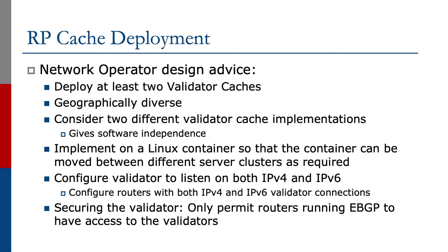Once you've built the validator cache, we need to look at how we might deploy these. With one validator cache available for the entire network, the routers end up speaking just to the one cache. If that cache goes away, the routers no longer have a means to check the validation of prefixes.